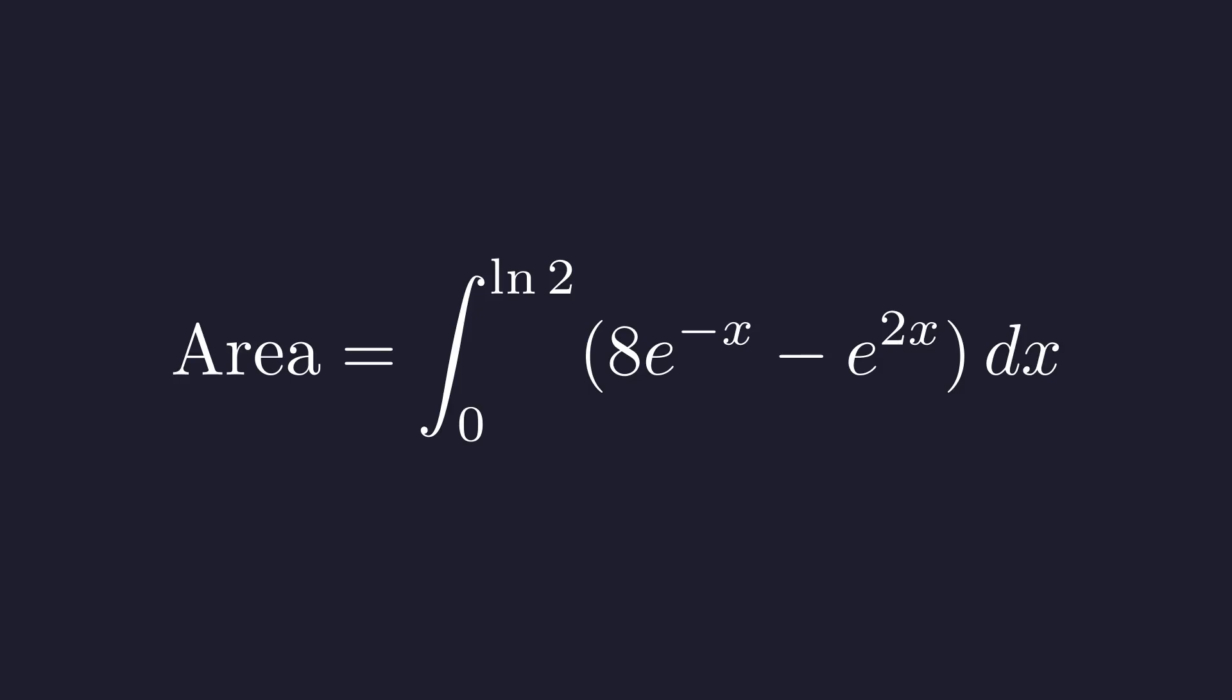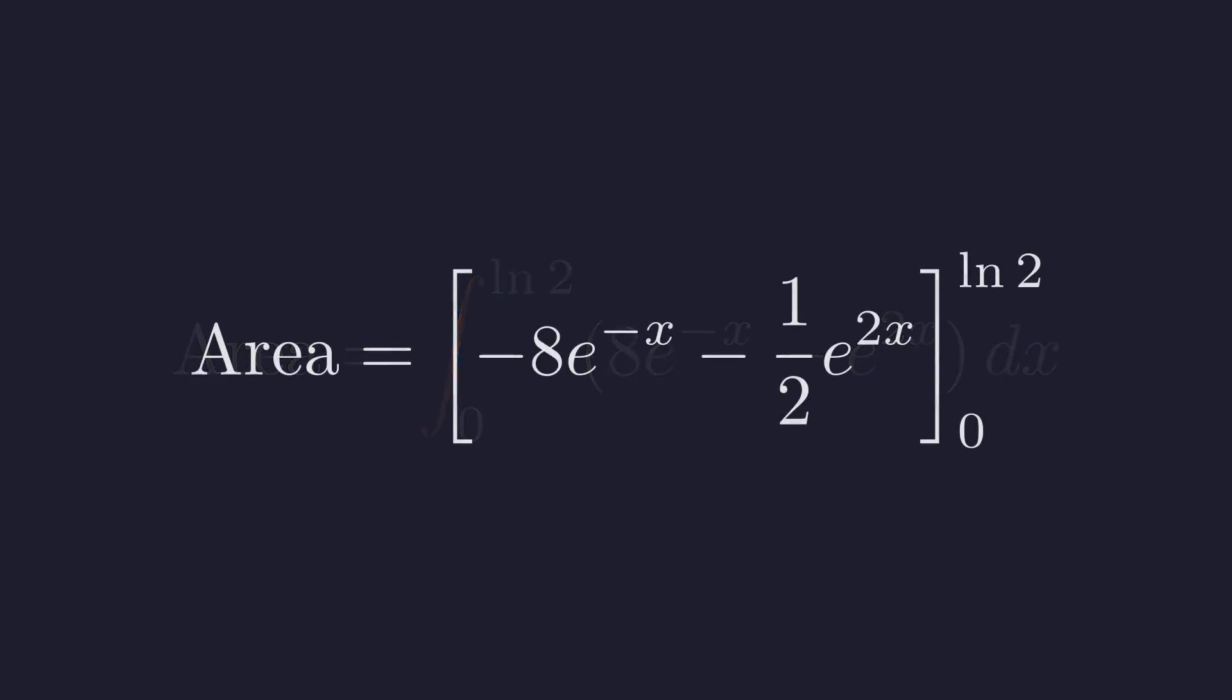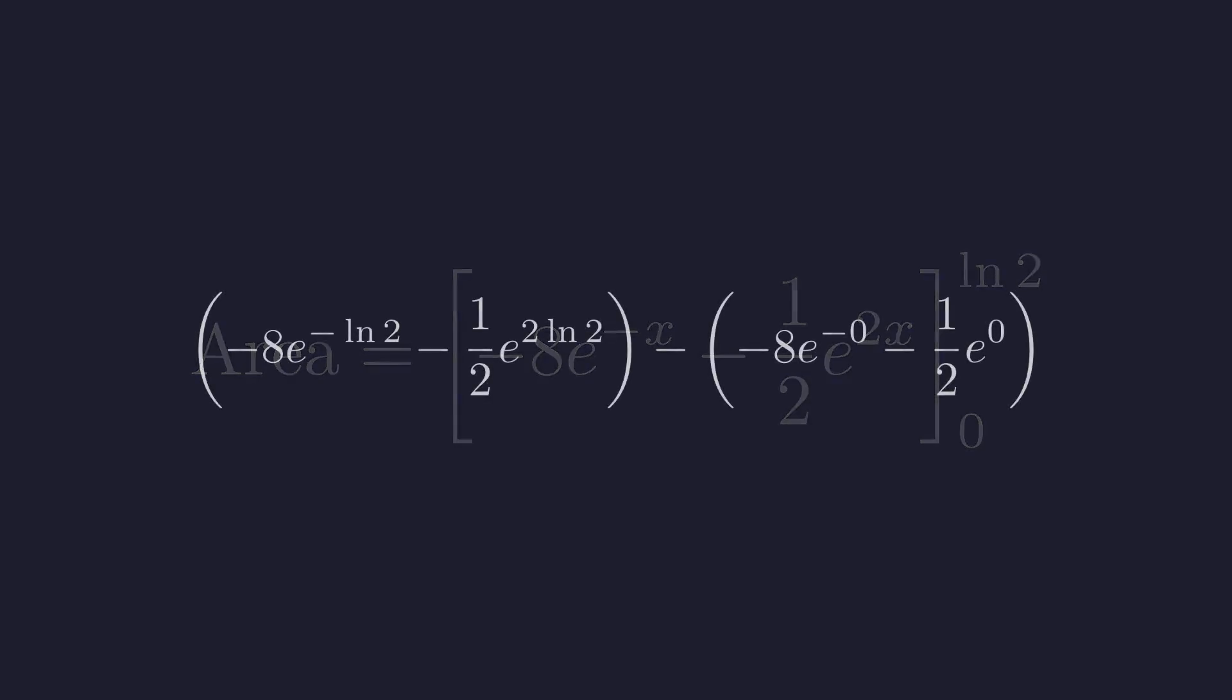With that confirmed, let's evaluate this integral. We need the antiderivatives of these exponential functions. The antiderivative of 8e to the negative x is negative 8e to the negative x. And for e to the 2x, it's 1 half e to the 2x. Now we evaluate from 0 to the natural log of 2. By the fundamental theorem, we plug in the upper limit, subtract the result of plugging in the lower limit. Let's substitute these values in.